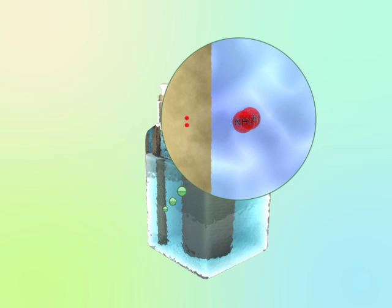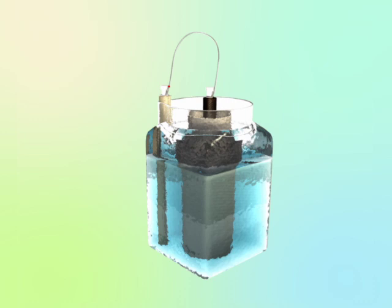When both electrodes are connected to each other, electrons will flow from the zinc rod to the carbon rod because of an excess of electrons in the zinc rod.